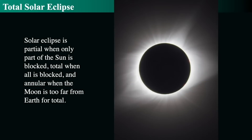Hey there! Just starting in now with total solar eclipses. A solar eclipse is when the moon covers the sun. Solar eclipses are partial when only part of the sun is blocked, and total when it's fully blocked.